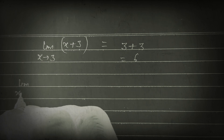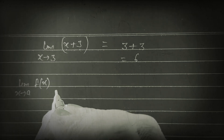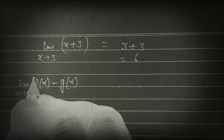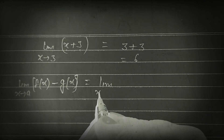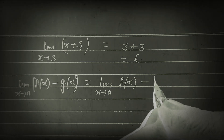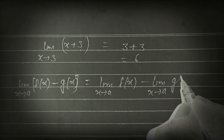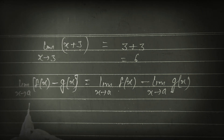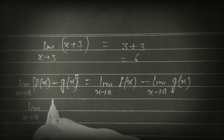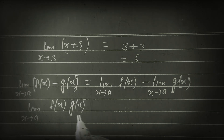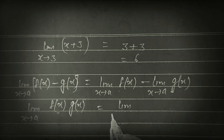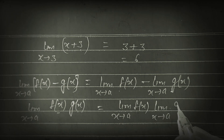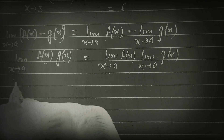If limit x tends to a of [f(x) × g(x)] — if two functions are in multiplication form, then we apply limit on both: limit x tends to a of f(x), multiplied by limit x tends to a of g(x).